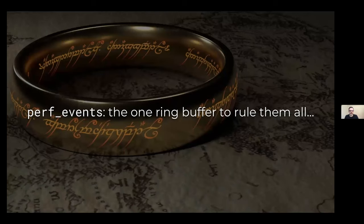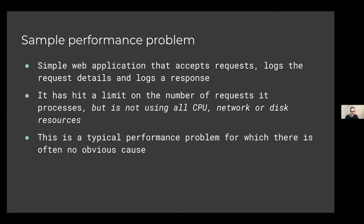I like to think of perf events as like the one ring buffer to rule them all. So let's dive into a sample performance problem. I'm going to demo a simple web application that accepts requests, logs the request details, and then returns a response. This application is misbehaving — it has hit a limit on the number of requests and processes, but it's not using all the resources assigned to it. It's not using all the CPU, network, or disk resources.